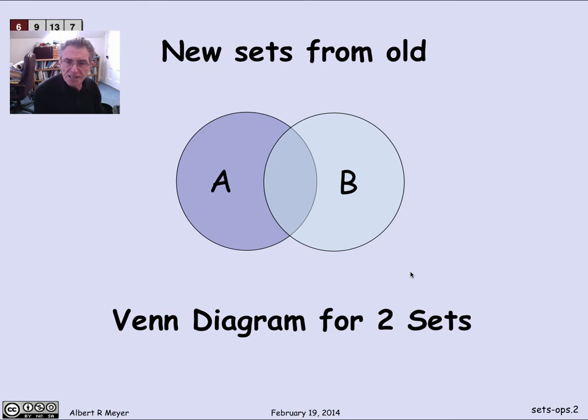It's still useful for three sets. It gets more complicated for four sets. And after that point, they're not really very useful. But a lot of the basic operations can be illustrated nicely in terms of the Venn diagram for two sets. And that's what we're about to do.